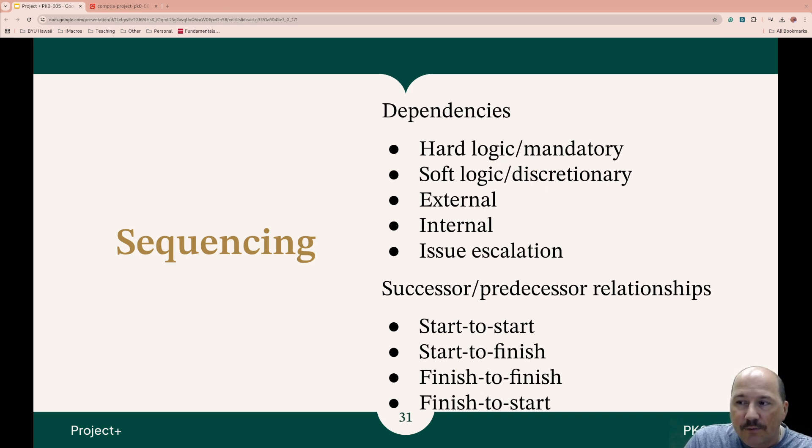Now there are successor-predecessor relationships. Start to start means a successor cannot start until the predecessor has actually started. Start to finish is the successor task cannot finish until the predecessor task has been started. Finish to finish is a successor task cannot start until the predecessor is finished. Finish to start is a successor cannot start until the predecessor task has finished. Just remember the first one is the successor task and the next is the predecessor. So they both have to start. The current task can't start until the last task is finished. Current task can't finish until the last task is finished. Current task can't finish until the predecessor task has started.